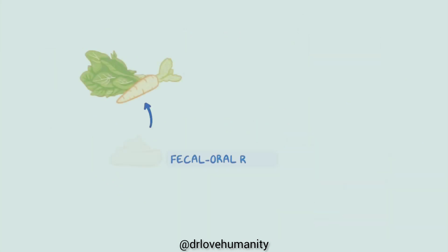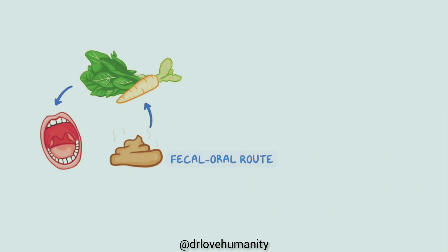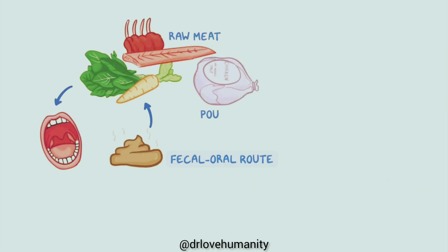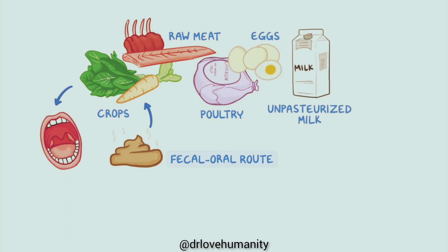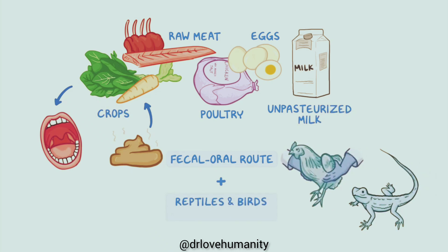Salmonella is typically transmitted through the fecal-oral route, after infected feces come into contact with various foods including raw meat, poultry, eggs, unpasteurized milk, and crops. Salmonella can also be present on the skin of reptiles and birds and be transmitted through contact with these animals.